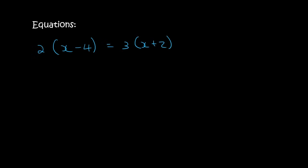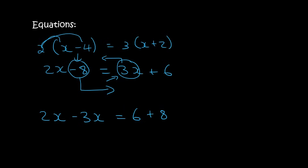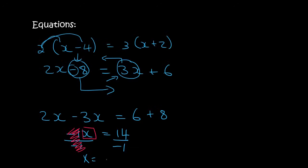With something like this, you want to multiply the brackets out first. So that becomes 2x minus 8 equals 3x plus 6. Now put the x's on the left: 2x minus 3x equals 6, and the minus 8 moves to the right becoming plus 8. So 2x minus 3x is minus x, and 6 plus 8 is 14. Divide both sides by minus 1 so these cancel out and x is left alone. So x equals negative 14.